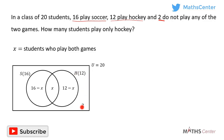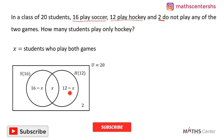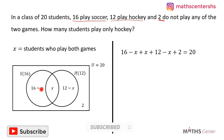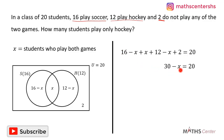When we add everything in the Venn diagram together, it gives us the universal set. So 16 minus X, plus X, plus 12 minus X, plus 2 equals 20. This gives us 30 minus X equals 20, so X equals 30 minus 20, which is 10.